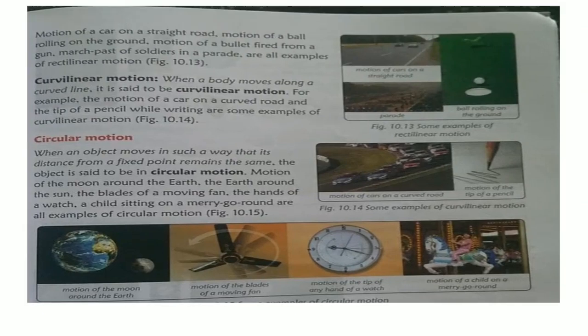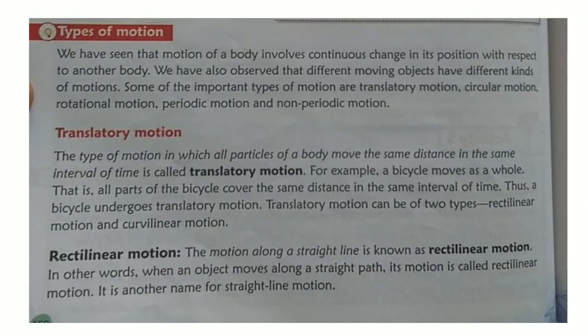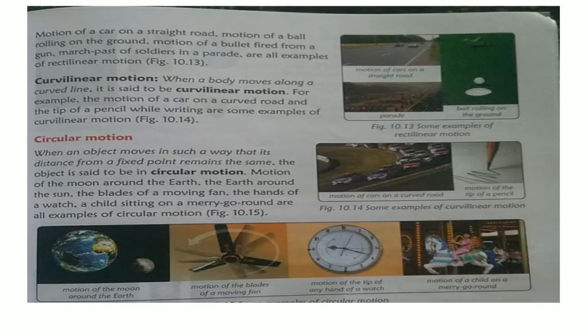The second subtype of translatory motion is curvilinear motion (also pronounced servilinear). When a body moves along a curved line, it is said to be in curvilinear motion. Examples: the motion of a car on a curved road — if the road is curved, the car's motion is also curved. Also, the tip of a pencil while writing is an example of curvilinear motion, as you can see in the picture.